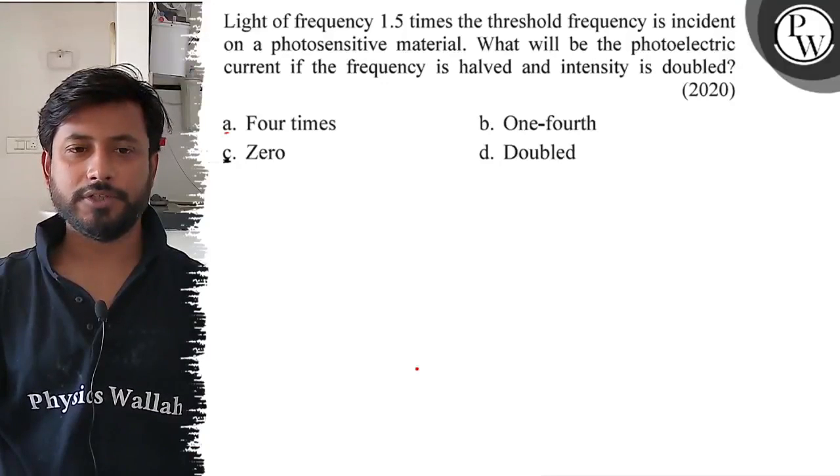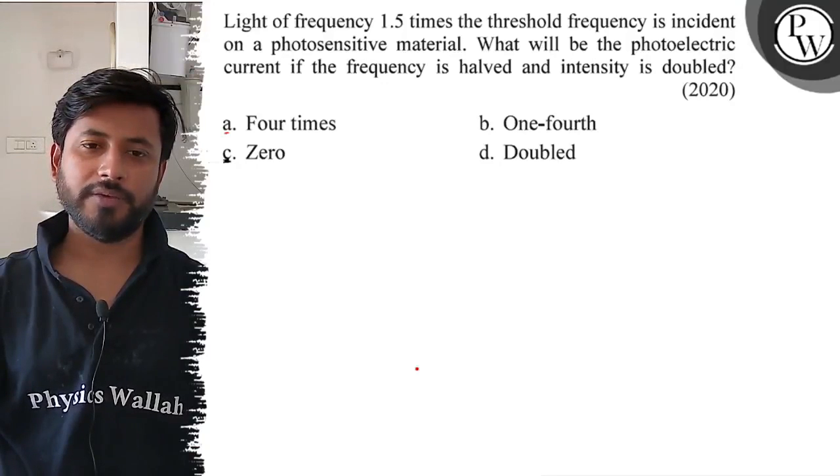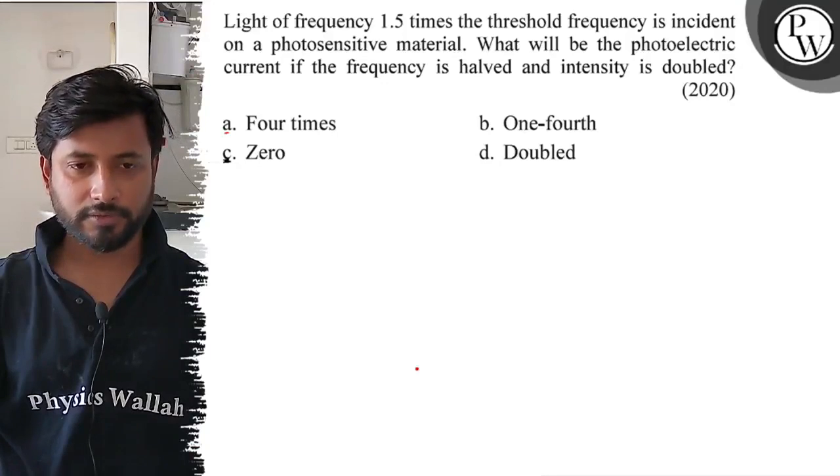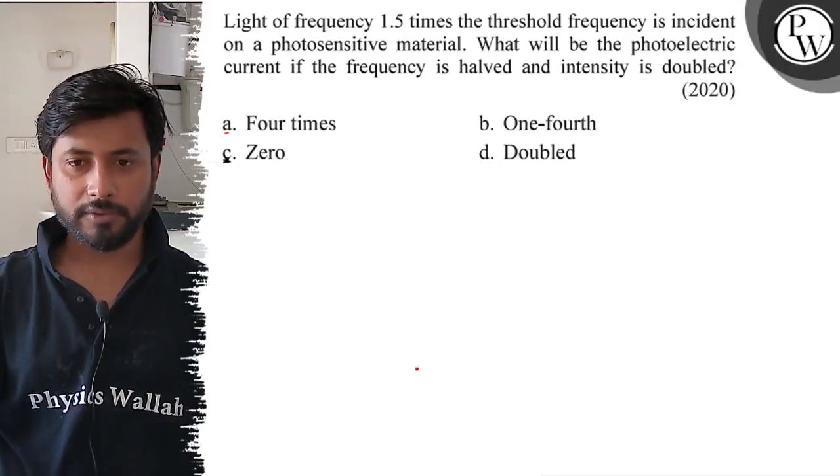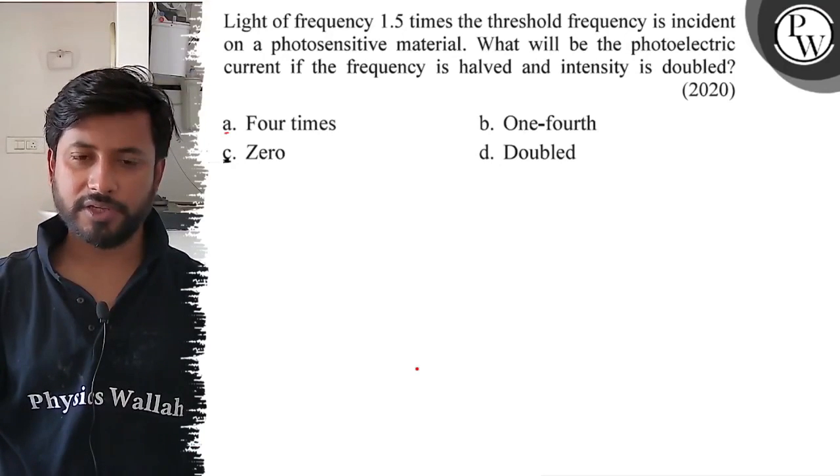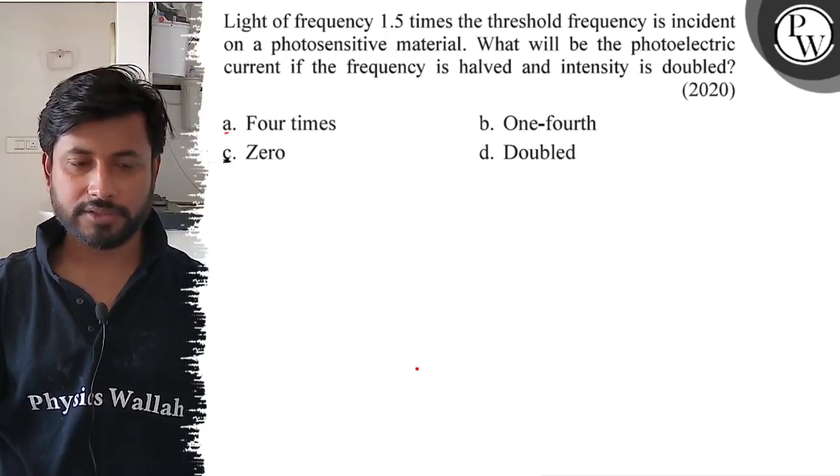Hello, let us see this question. Light of frequency 1.5 times the threshold frequency is incident on a photosensitive material. What will be the photoelectric current if the frequency is halved and intensity is doubled?